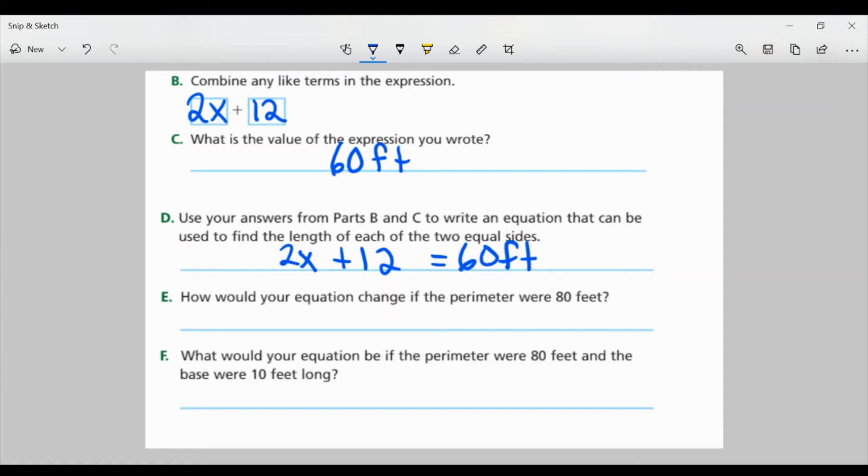Part E. How would your equation change if the perimeter were 80 feet? Well, the sides would stay the same. It's still 2X plus 12. The only thing that would change is the 60. We would change it to 80 feet. Because that would be the new perimeter.